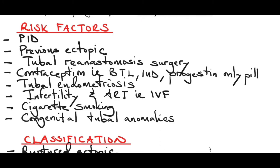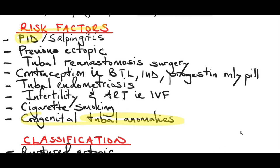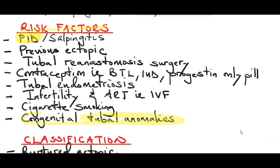What causes this problem in the fallopian tube? It could be congenital tubal anomalies, for example a diverticulum in the fallopian tube. Pelvic inflammatory disease increases the risk of ectopic pregnancy by 6 to 10 times compared to a patient who has never had PID. Remember that pelvic inflammatory disease is a spectrum of disease caused by genital infection, commonly sexually transmitted infection. The most common associated STI is Chlamydia trachomatis, which can also include gonorrhea. One complication of PID or STIs is salpingitis — infection and inflammation of the fallopian tube.